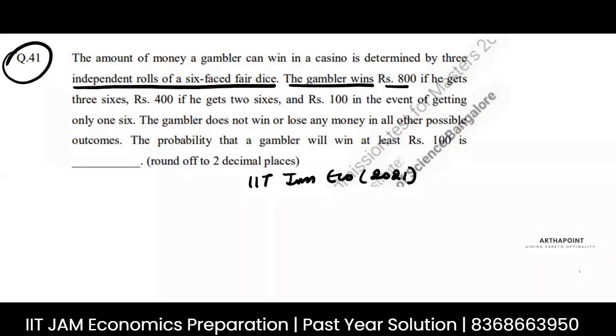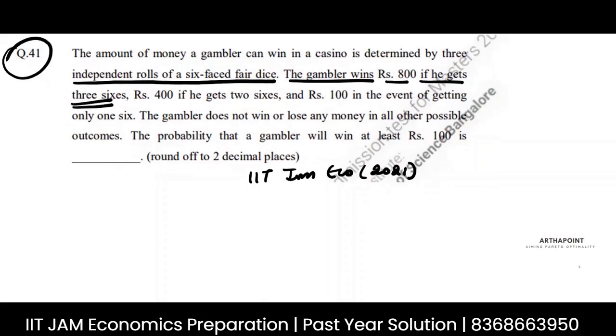The gambler wins Rs. 800 if he gets three sixes. If there are three sixes, he gets 800. He wins 400 if he gets two sixes.